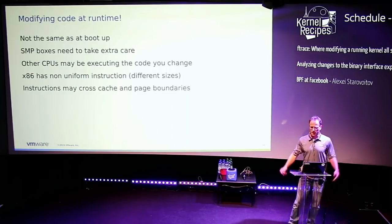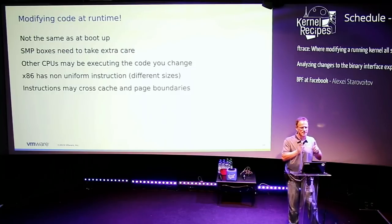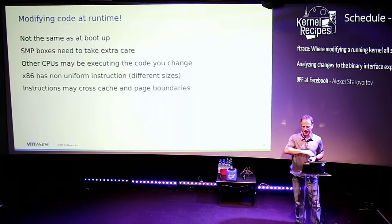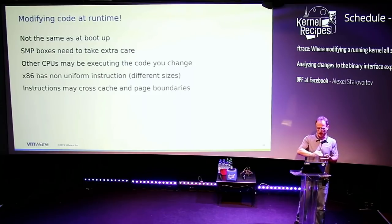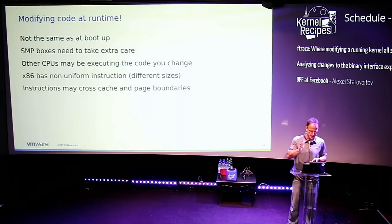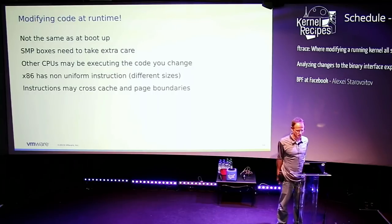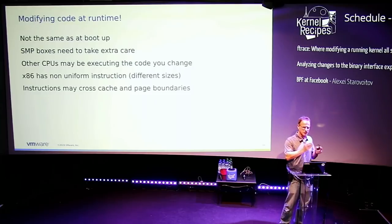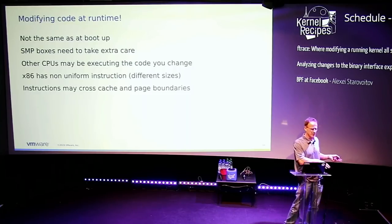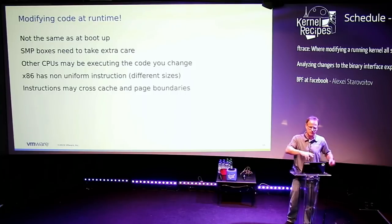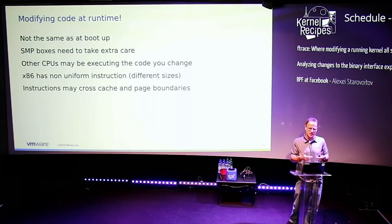Now let's talk about modifying code at runtime — which is different from boot time. On a uniprocessor machine you could just naively modify code being executed — it's one CPU and you can do it atomically. But on an SMP machine things get strange, especially because x86 doesn't have uniform instruction sizes. Instructions can be one byte to ten bytes, with no guarantee where they'll lie — they could span cache boundaries or page boundaries. The CPU doing prefetching can get confused when code changes mid-flight, causing a general protection fault.